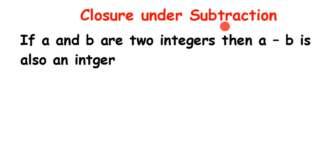This closure property satisfies for integers under subtraction. There is also another property — closed under addition — where the same rule applies. Let us take a few examples. I'm going to take two integers.